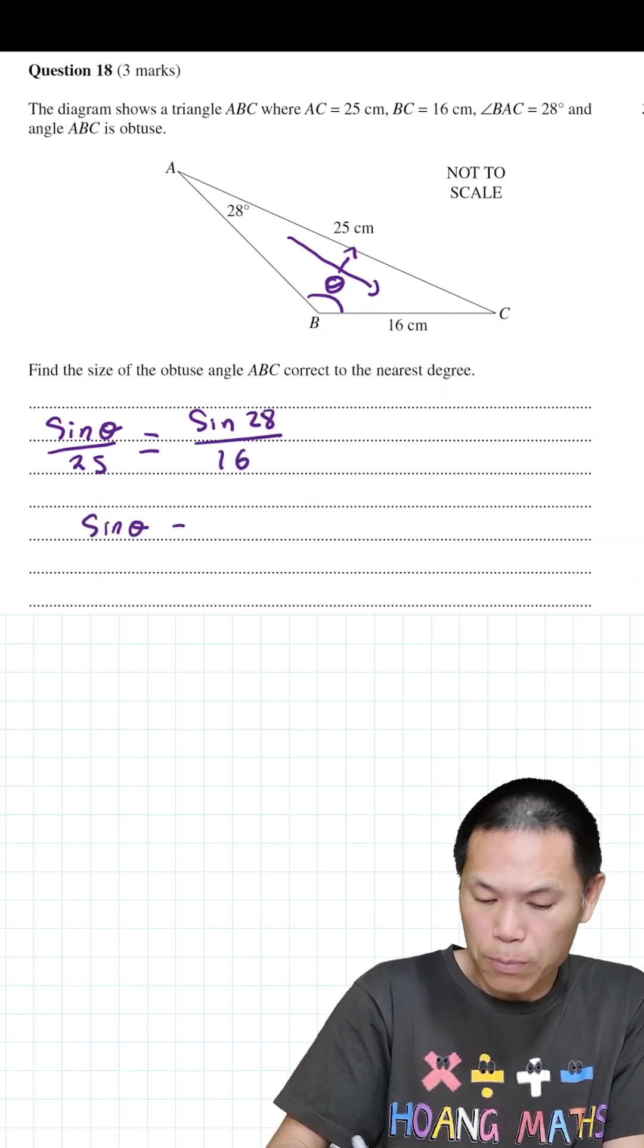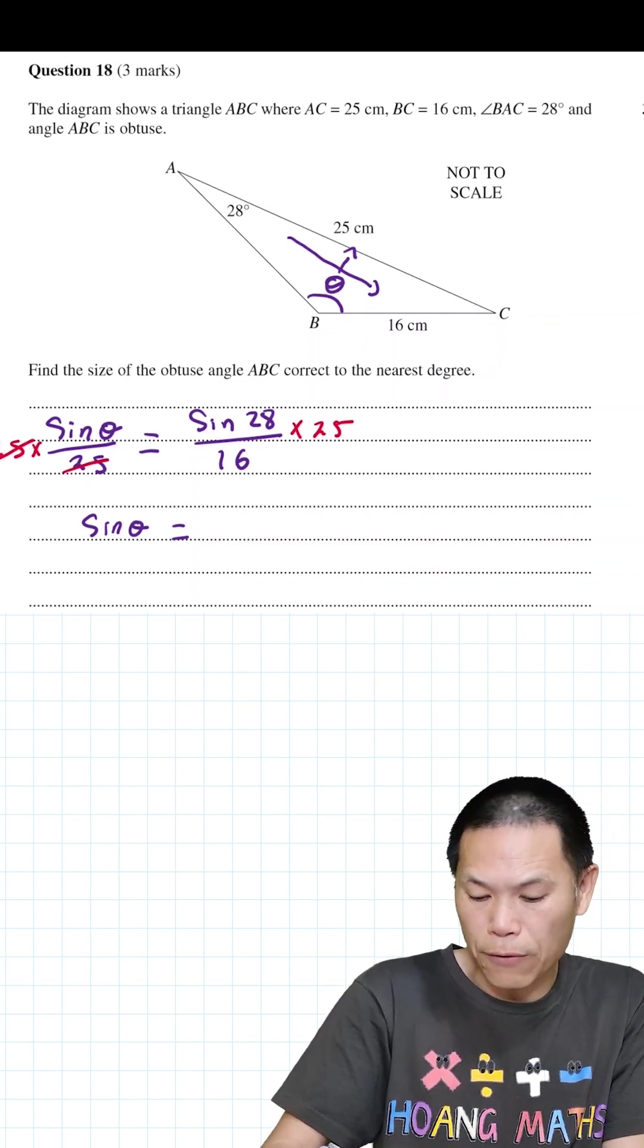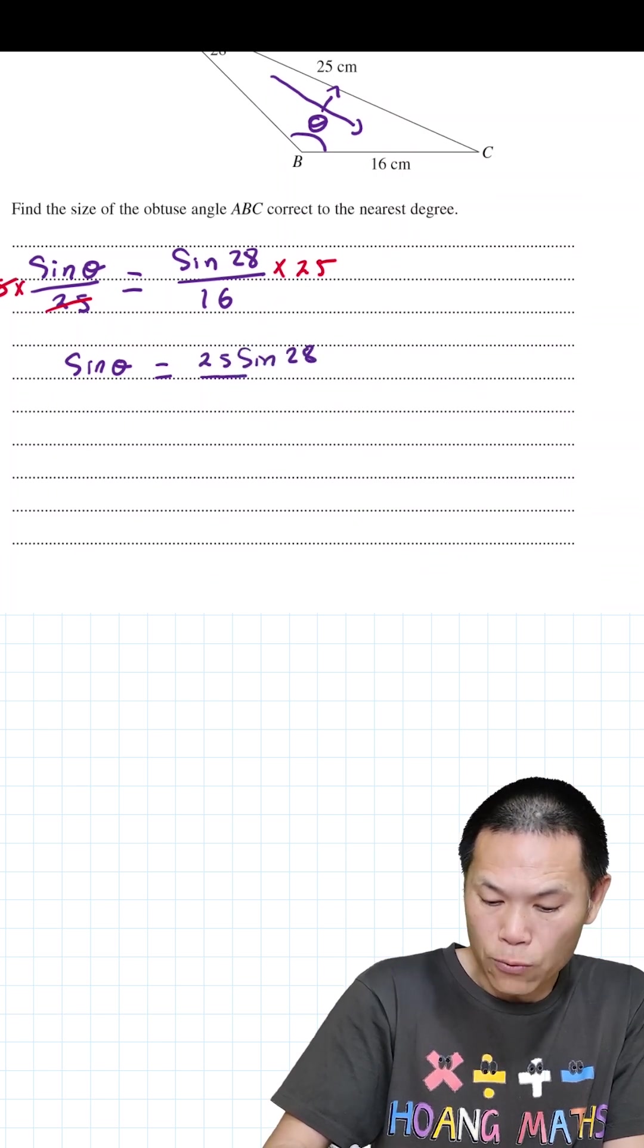Sine theta: multiply by 25 and this cancels out. This will give me 25 sine 28 over 16.